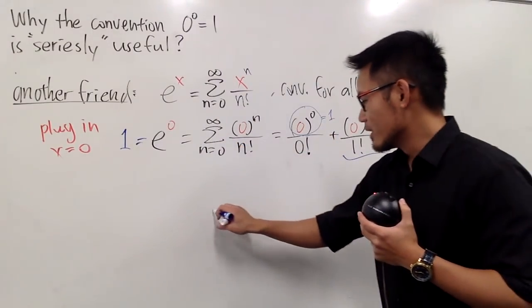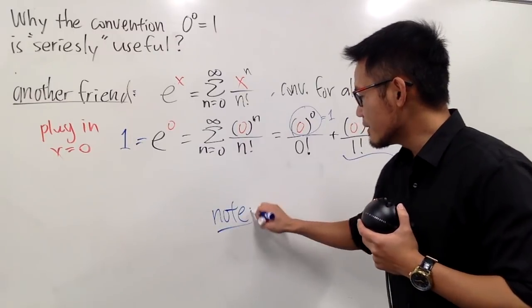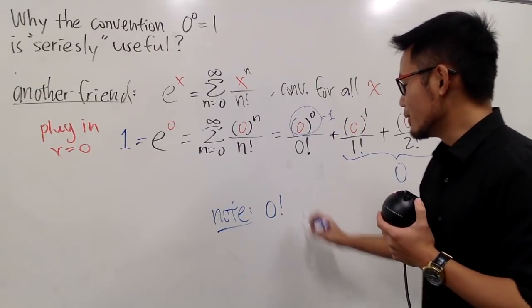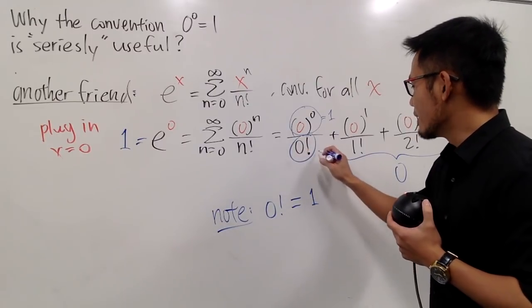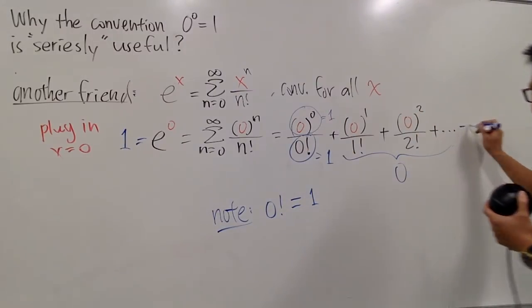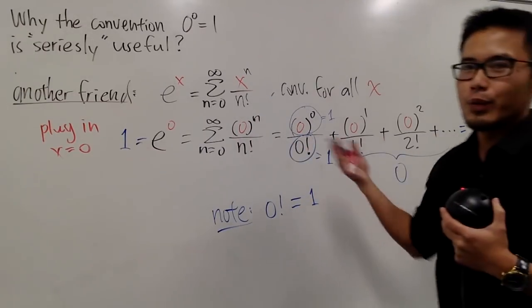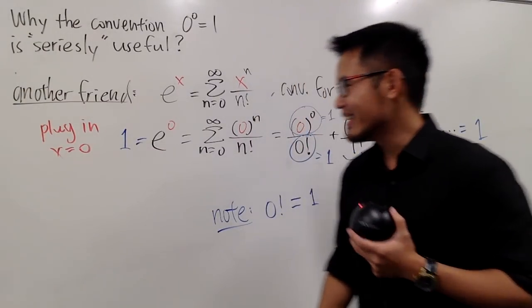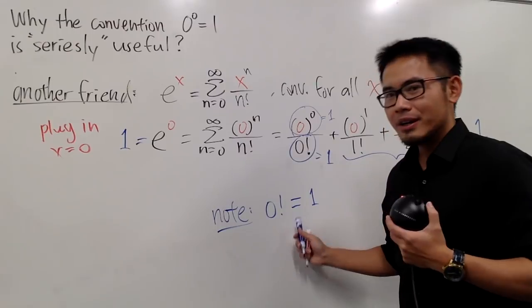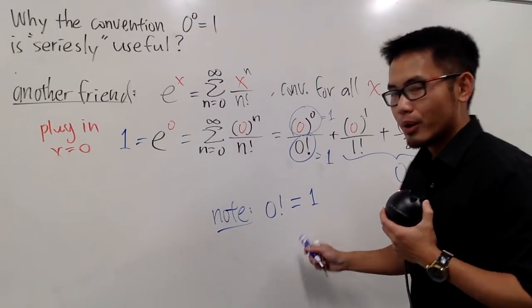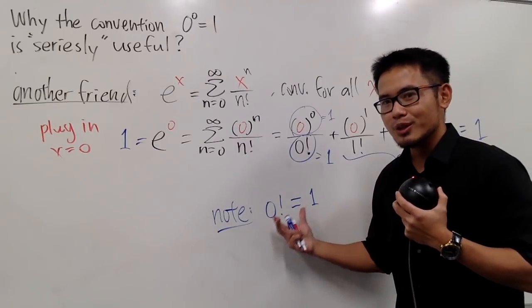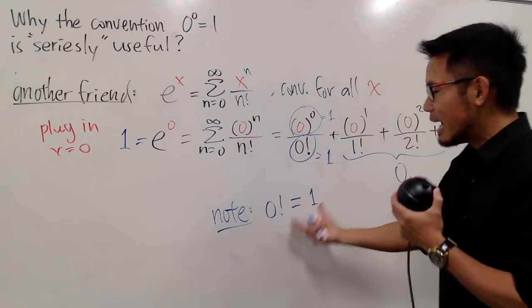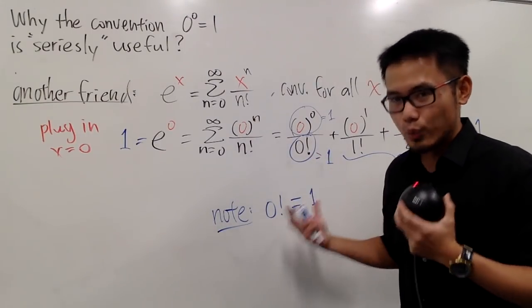Well, with that being said, here is the note. We must have, we must take 0 factorial to be equal to 1. So that, you see, 1 over 1, we will end up with 1, and that's the happy 1 that we want to get on both sides. And this right here, it's really, really debatable in the sense that, will you call this a convention, or would you call this a definition? Because this happens in many other situations as well.